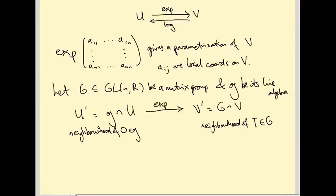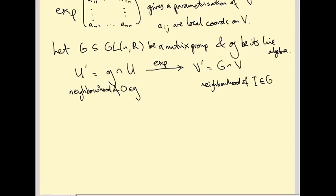The exponential map does go from little g to big G, by definition of little g: little g is the set of matrices X such that exp(tX) is in G for all t. In particular, the exponential of anything in the Lie algebra lands in the Lie group. And we already know exp of anything in U lands in V, so exp of anything in little g ∩ U lands in big G ∩ V. So aren't we done — doesn't this give local coordinates on G?